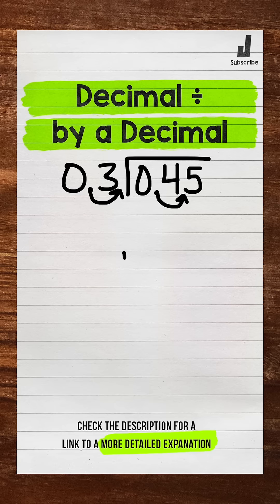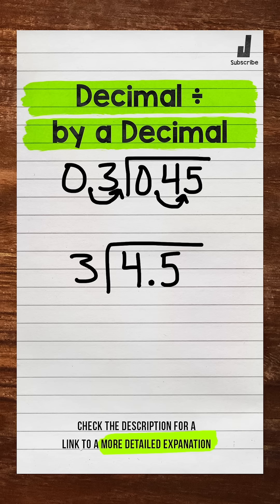Let's rewrite this problem. We have 4 and 5 tenths divided by 3. The divisor is whole, so bring the decimal straight up and now we start with divide. We have 4 divided by 3. One whole group of 3 and 4.